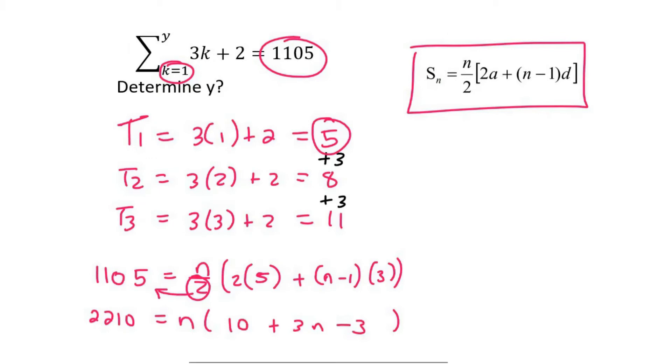And then I neaten up the inside, which will be 10 plus 3n minus 3. I put the 10 and the minus 3 together to make 7. Then we can multiply the n into the bracket, so it'll be 7n plus 3n squared.